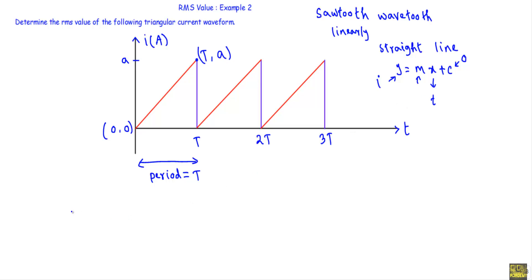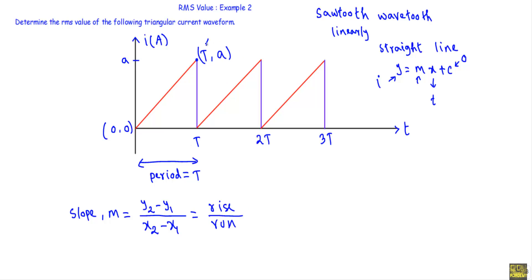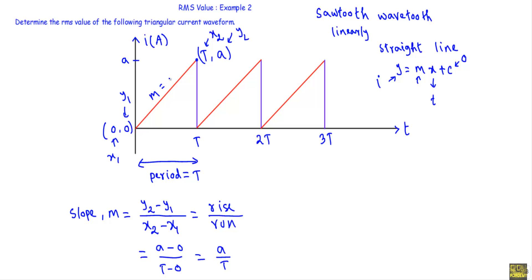Now we calculate the slope of the straight line. The slope m equals the change in y-axis: (y2 − y1) divided by (x2 − x1). Here T is x2, A is y2, 0 is x1, and 0 is y1. So using the formula I get (A − 0) over (T − 0), which equals A over T.